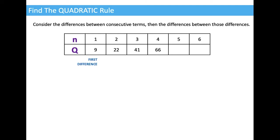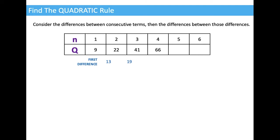I'm going to call the differences between the terms the first difference. The difference between 9 and 22 — 22 minus 9 — is 13. The next one, 41 minus 22, is 19. And then the next one, 66 minus 41, is 25.